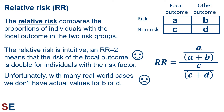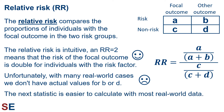Unfortunately, with many real-world cases, especially in medicine, we don't have actual values for B or D. If you think about a lot of medical studies, we probably have patients or subjects who show the focal outcome and we can ask them about their risk factors to get A and C, but we don't have good data on everybody else to get B and D. On the bright side, the next statistic is easier to calculate with most real-world data.